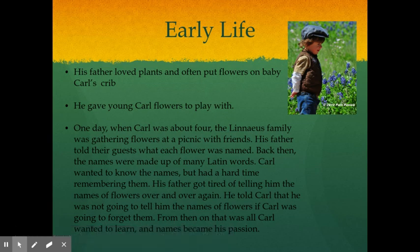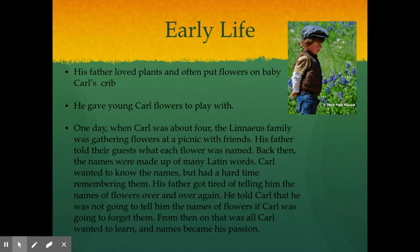In his early life, Carl's father loved plants and would often put flowers on baby Carl's crib. One day when he was about four years old, the Linnaeus family was gathered picking flowers at a picnic with friends. His father told their guests what each flower was named. Back then, the names were made up of many Latin words. Carl wanted to know the names, but he had a hard time remembering them. He kept asking his father what each one was, and his father eventually got tired of repeating himself and told Carl he was not going to tell him names if Carl was just going to forget them. But from then on, names became his passion.